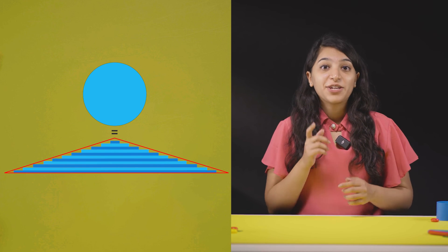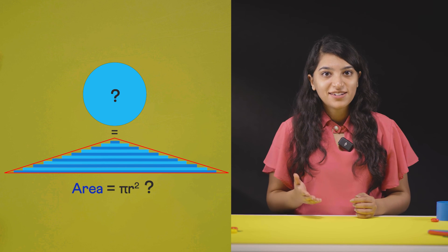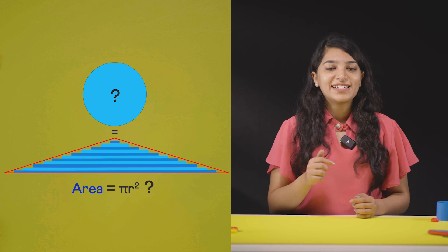Now using this idea of strips, can you figure out how to find the area of the circle? Will it give us the same result? Give it a thought and let us know in the comments.